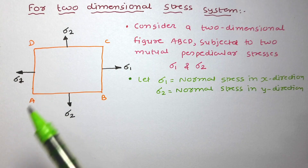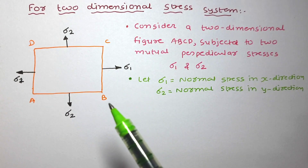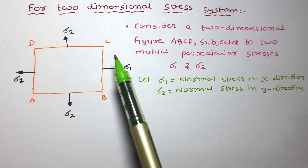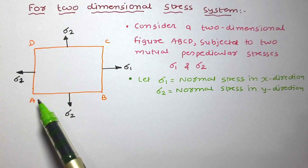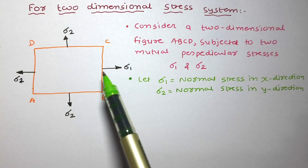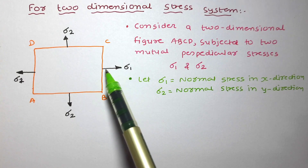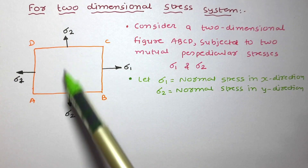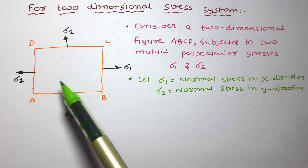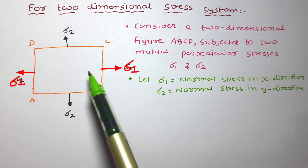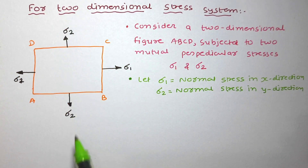Now let us see the constitutive relationship between stress and strain in a two-dimensional stress system. Consider figure ABCD, which is a two-dimensional figure. Two normal stresses which are mutually perpendicular to each other are acting on two mutually perpendicular faces of this block: sigma 1, the normal stress in the x-direction, and sigma 2, the normal stress in the y-direction.